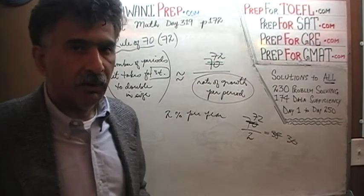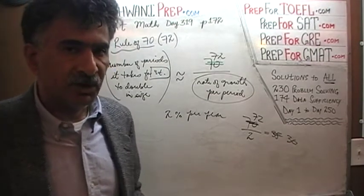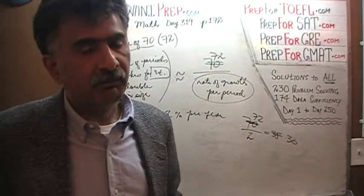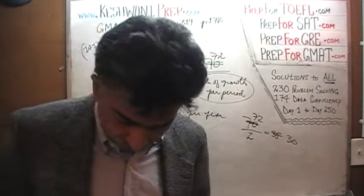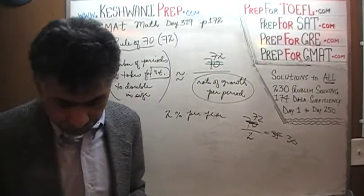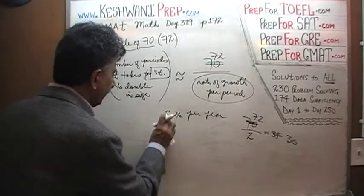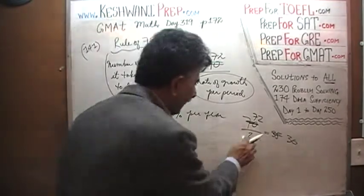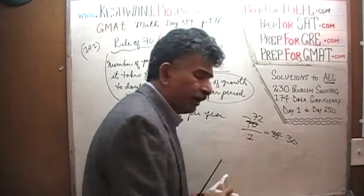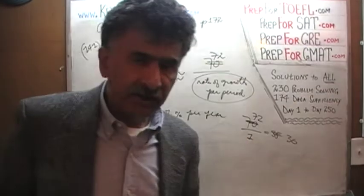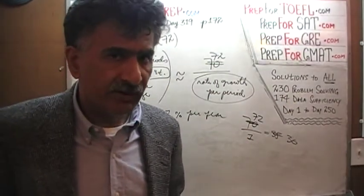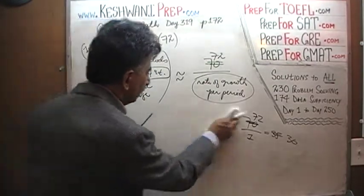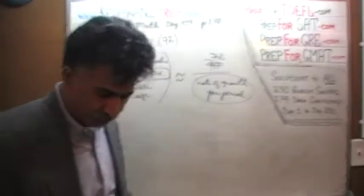If you were to actually calculate it using natural log with a base of 2, the correct answer would be very close to 36. One more example: if something is growing at 1%, it does not take 100 years to double in size — it doubles in size in merely 72 years. But you get the idea. Let's do the actual problem.